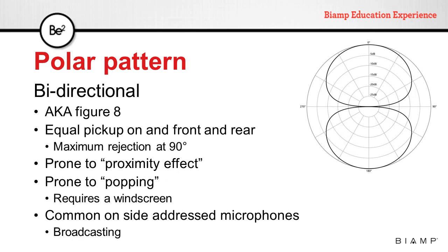Narrowing the pattern a little bit more, we get to the bidirectional pattern, also known as a figure 8. In this pattern, both the front lobe and the back lobe are exactly the same. The maximum rejection is at 90 degrees, meaning the microphone can pick up equally from the front or the back. These are very common on side-address microphones used for broadcasting and studio recording using the MS technique.